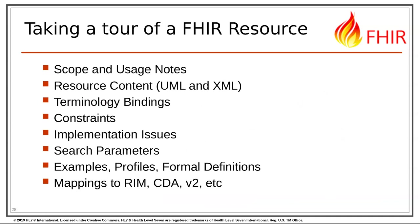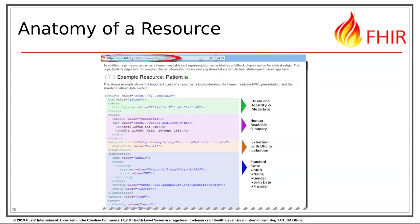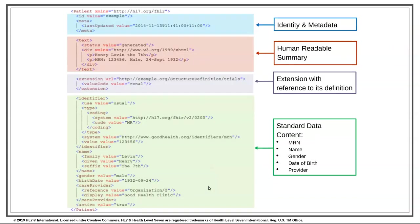Let's do a quick tour of a FHIR resource using an example from the FHIR summary documentation — a patient resource. At the top, there's some basic metadata including the ID of the resource. Right below that is a human-readable narrative text rendered as XHTML — a pre-rendered view of this person's name and medical record number. Below that is an example of what we call extensions, which are ways to put additional information not included in the core data models. Finally, we get into the standardized data — things like the patient's name, address, and medical record numbers. We're looking at an XML representation of a patient here, but we'll also look at JSON representations.